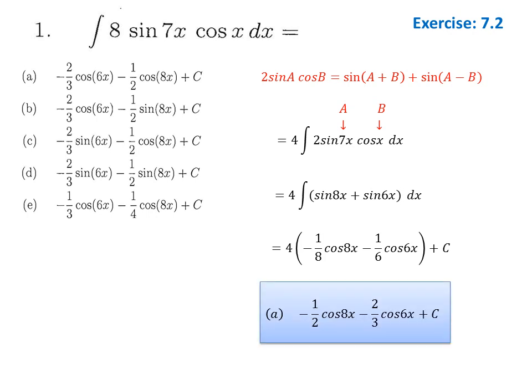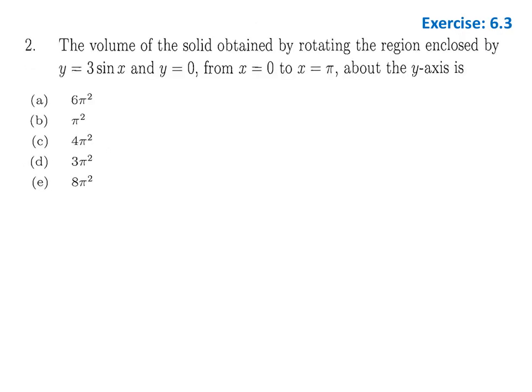The answer is the first option. The second question is from exercise 6.3: the volume of the solid obtained by rotating a region — this covers the cylindrical shell method.